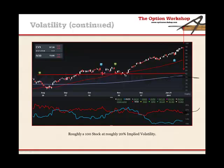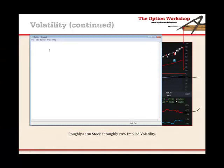Let's talk about implied volatility a little bit more. In option pricing, we have a few different components that make up an option price. Option price equals: one, the stock price or the underlying price; two, the strike price of the option; three, the time to expiration; four, the interest rate; and five, volatility. Now, we know what the stock price is, we know our strike price, we know how much time there is to expiration, we know what the interest rate is. So the only unknown variable to pricing an option is volatility.